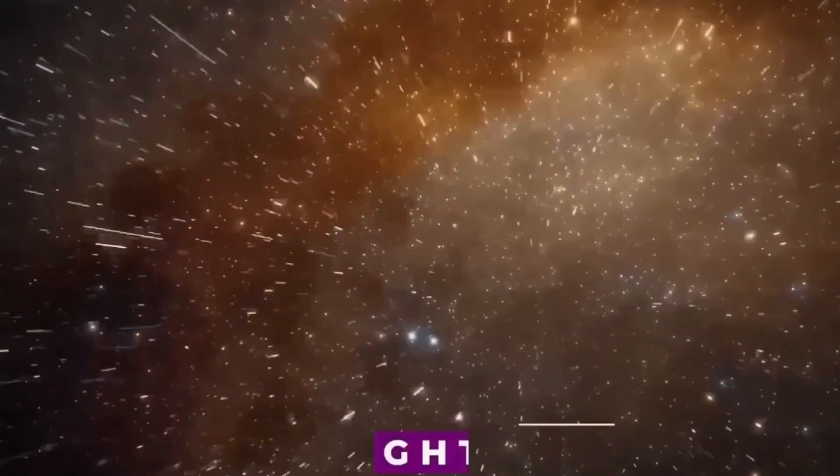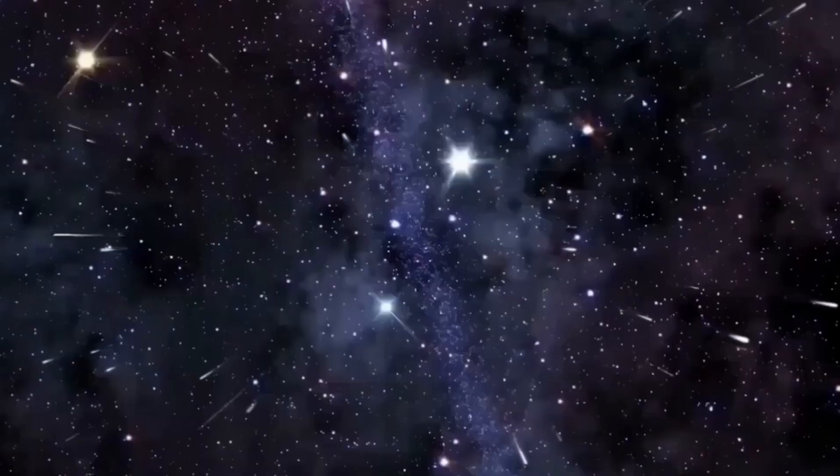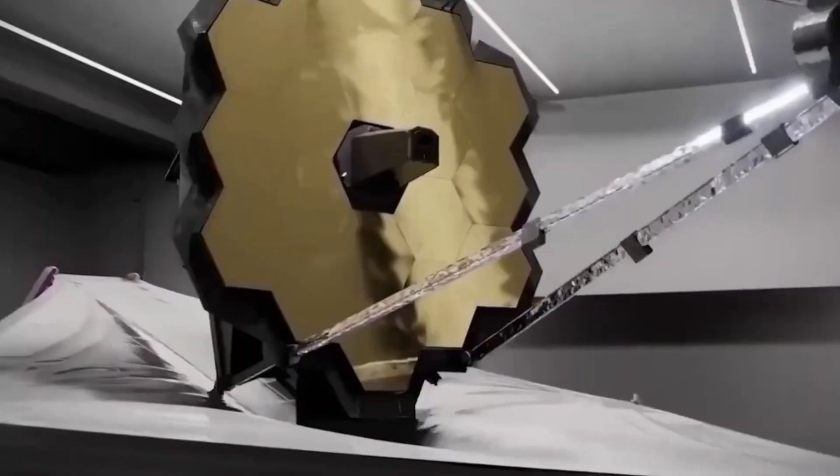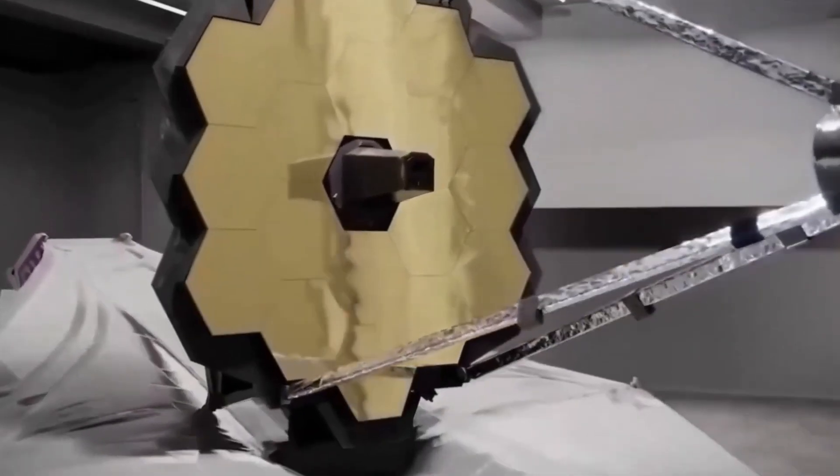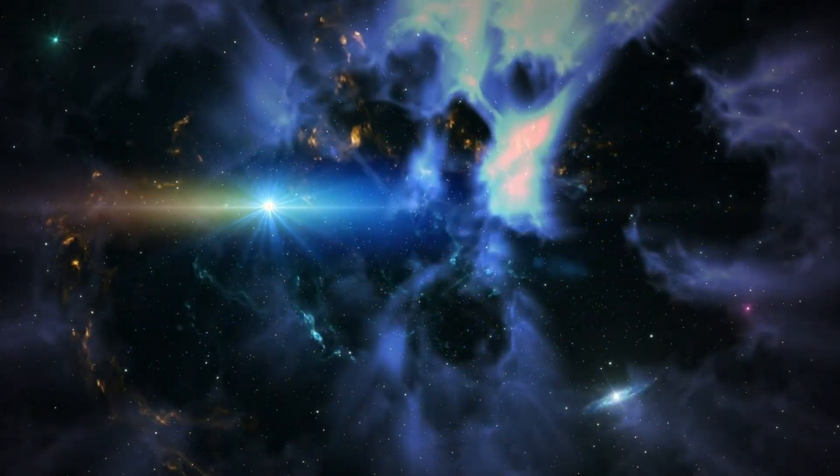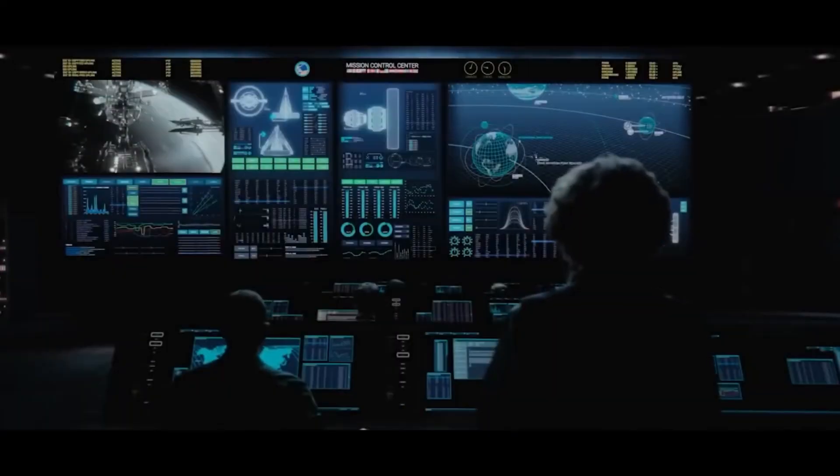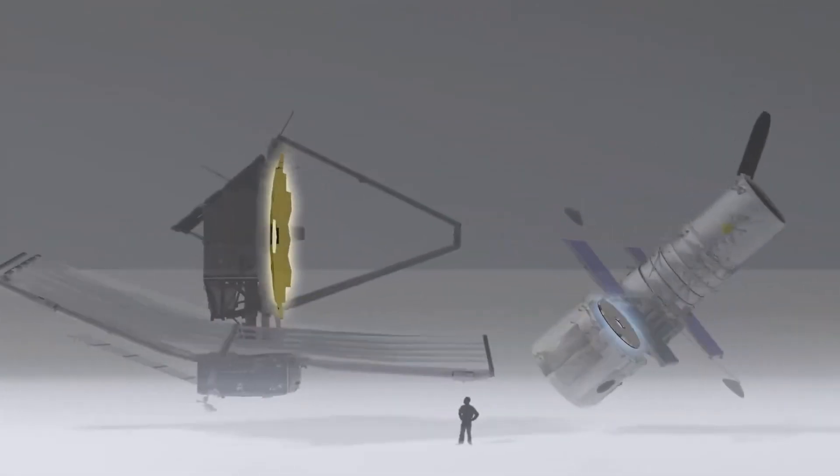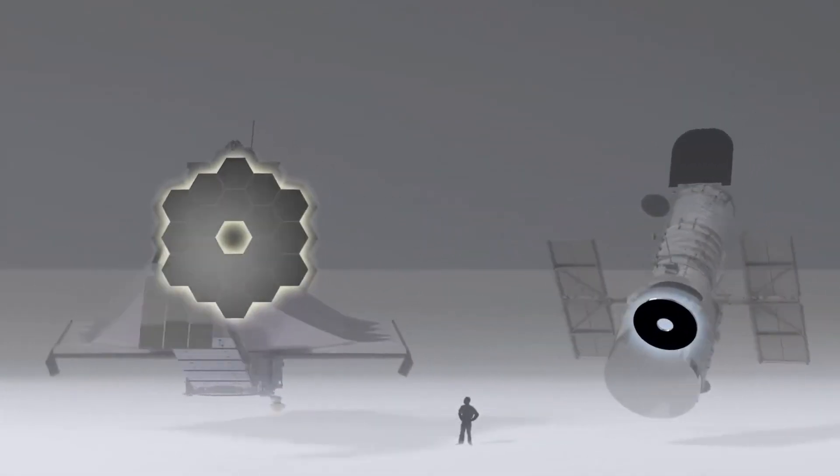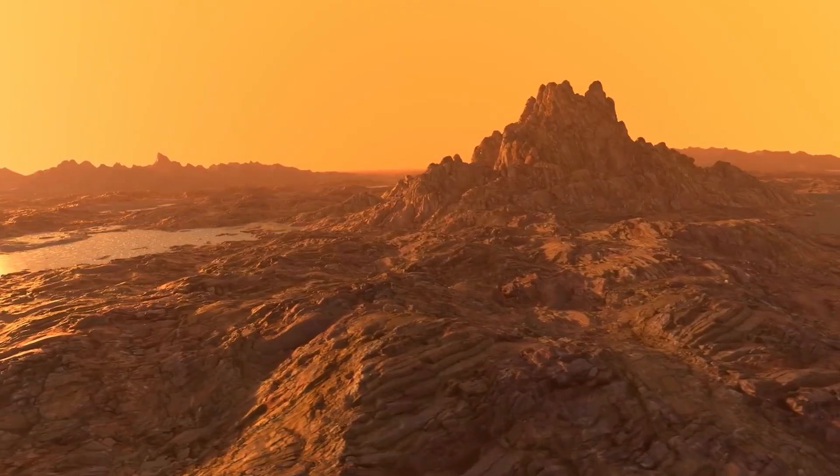What could be the cause of these unusual lights on Proxima Centauri b? Could they indicate the existence of life beyond our own planet? For years, mankind has longed and searched for signs of life beyond our own solar system. Any hint suggesting the possibility of this has been greeted with great enthusiasm.